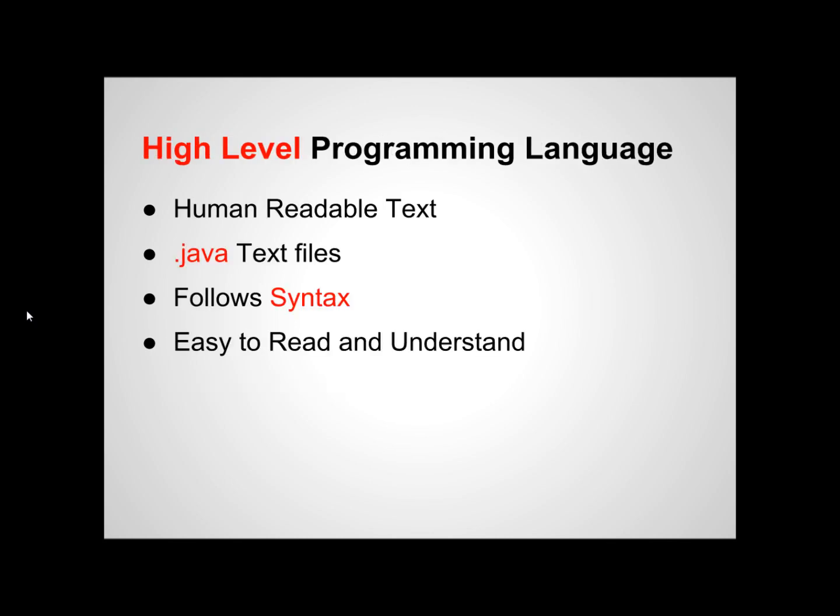What does it mean to be a high-level programming language? This means that the Java source code is written in a plain-text, human-readable format. These files are saved with a .java extension. Like other normal languages, like English for example, Java has a set of rules on how the code can be written. This is known as a syntax.